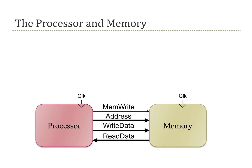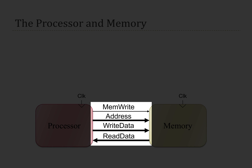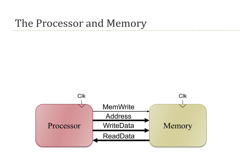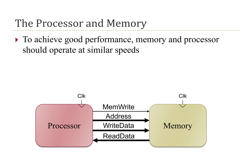This video is going to discuss the basic relationship between processors and their memory. At a high level, we can think of the processor as a block that communicates with memory through a couple of signals. It provides memory with an address that it either wants to read or write, and then depending on whether it's reading or writing, either memory changes its data based on inputs from the processor, or the memory returns a piece of data back to the processor. In an ideal situation, the processor and memory operate at similar speeds.